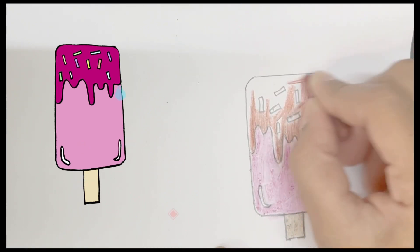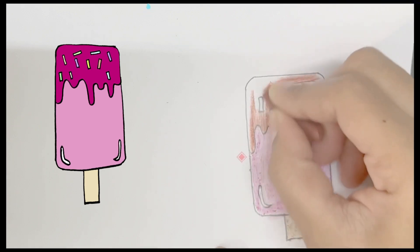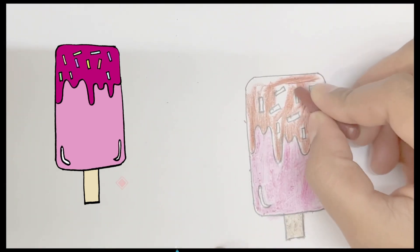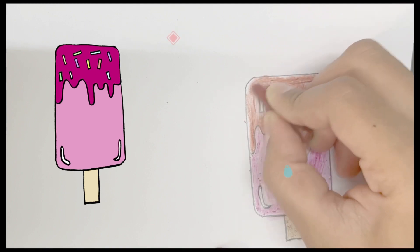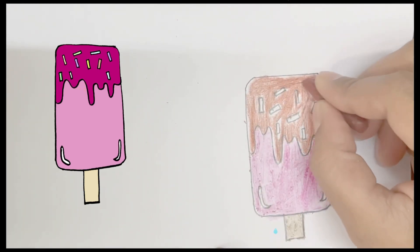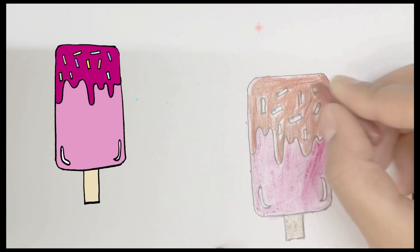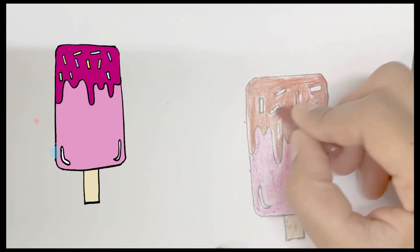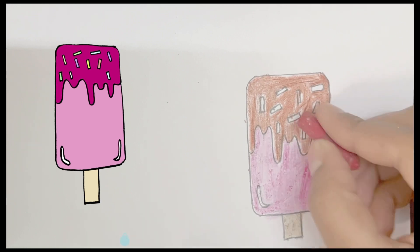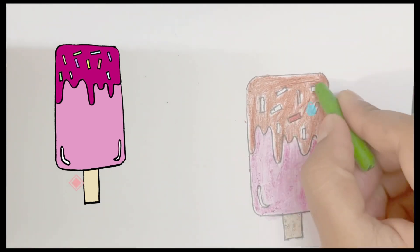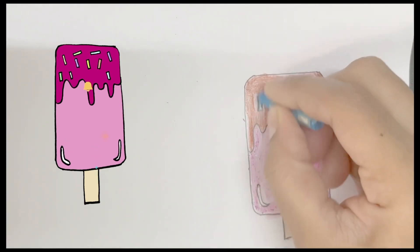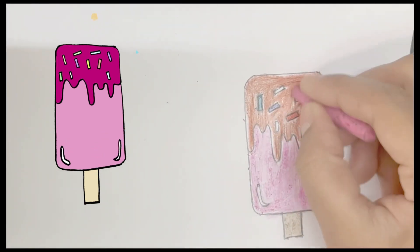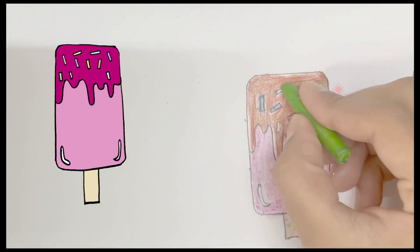Up and down, round and round, up and down, round and round. Now it's sprinkles time: red, green, gray blue, purple pink, and green.